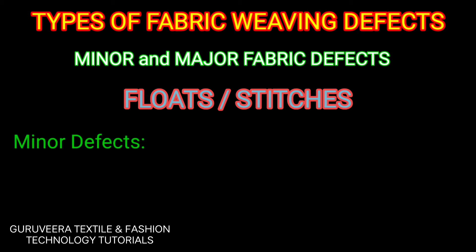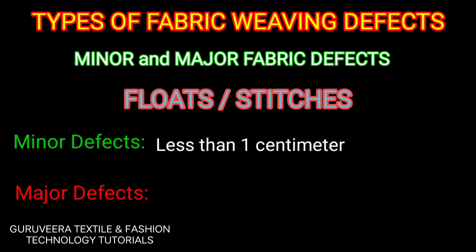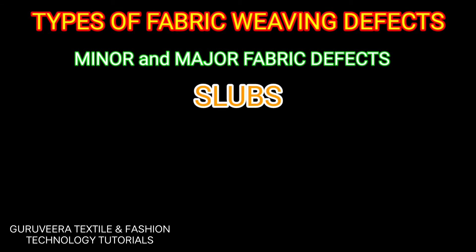The next defect is floats and stitches. Floats or stitches less than one centimeter are considered minor defects. Floats or stitches from one to five centimeters — meaning without interlacement — are in the major range.